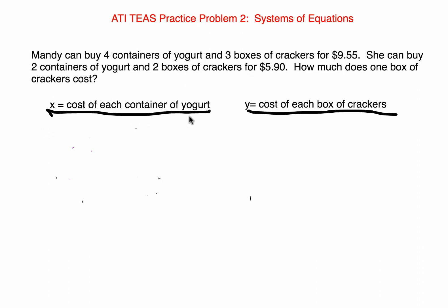In order to find these two unknowns, we are going to have two equations to work from. The first equation is going to be based on four containers of yogurt times the unknown cost, plus three boxes of crackers times its unknown cost, with that all equaling $9.55.